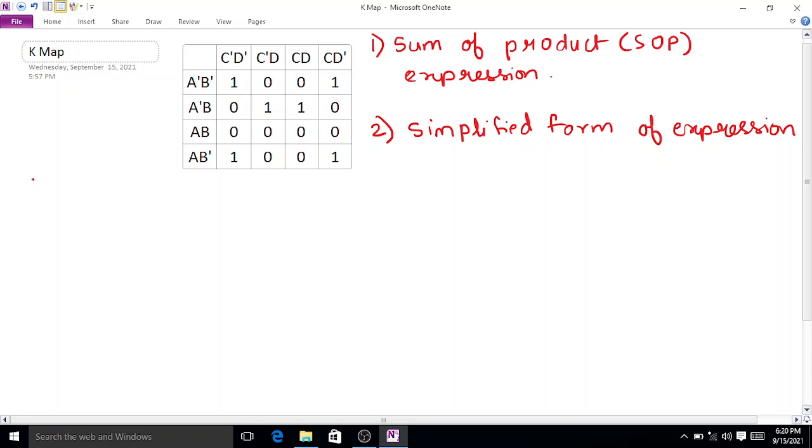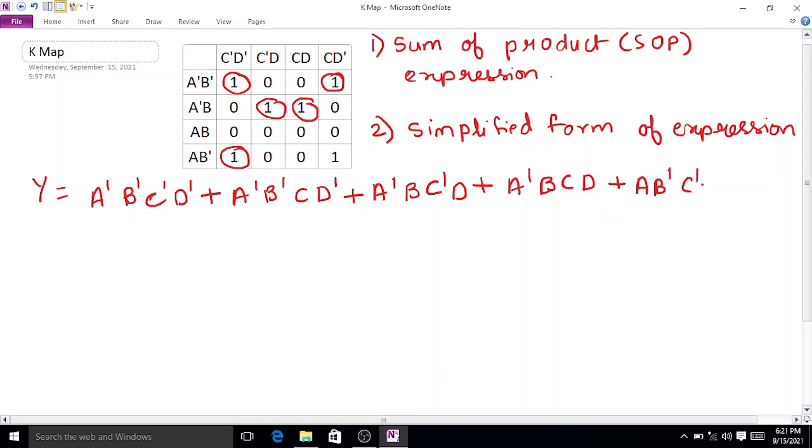So suppose Y equals first single A'B'C'D' plus next single A'B'CD' plus A'BC'D plus A'BCD plus AB'C'D' plus AB'CD'.